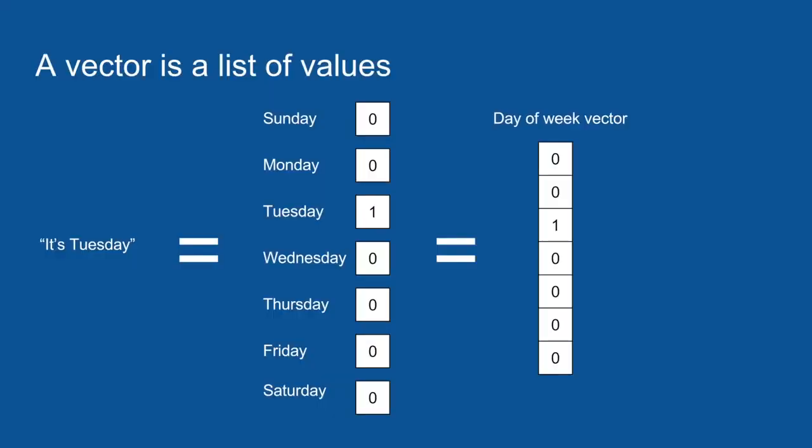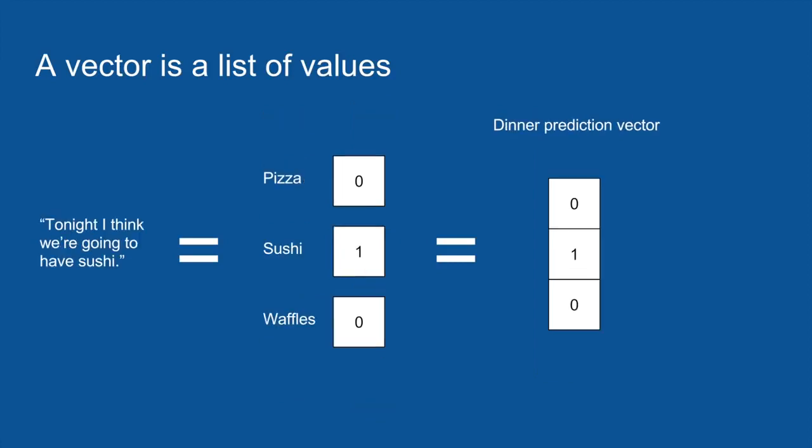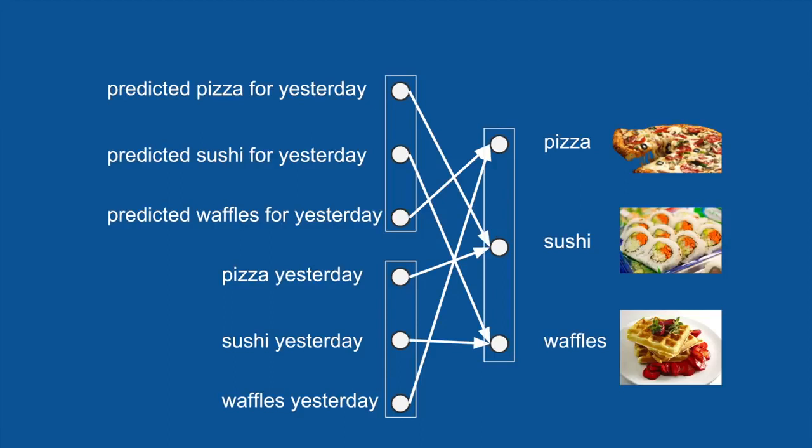We can also have a vector for statements like, it's Tuesday. In order to encode this kind of information, what we do is we make a list of all the possible values it could have. In this case, all the days of the week. And we assign a number to each. And then we go through and set them all equal to zero, except for the one that is true right now. This format is called one-hot encoding. And it's very common to see a long vector of zeros with just one element being one. It seems inefficient, but for a computer, this is a lot easier way to ingest that information. So, we can make a one-hot vector for our prediction for dinner tonight. We set everything equal to zero, except for the dinner item that we predict. So in this case, we'll be predicting sushi.